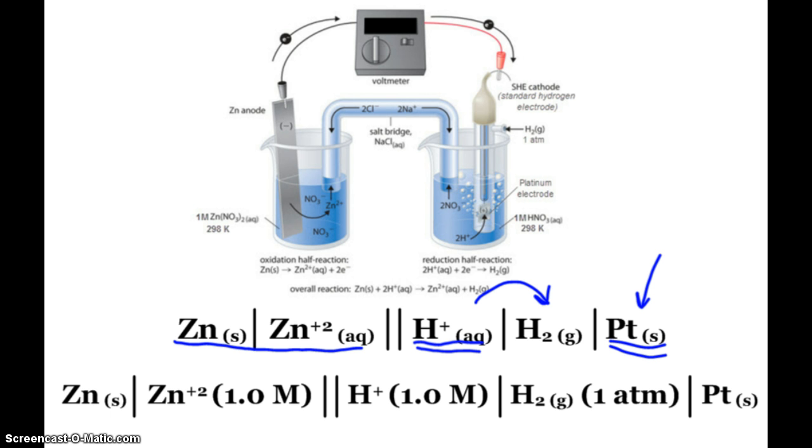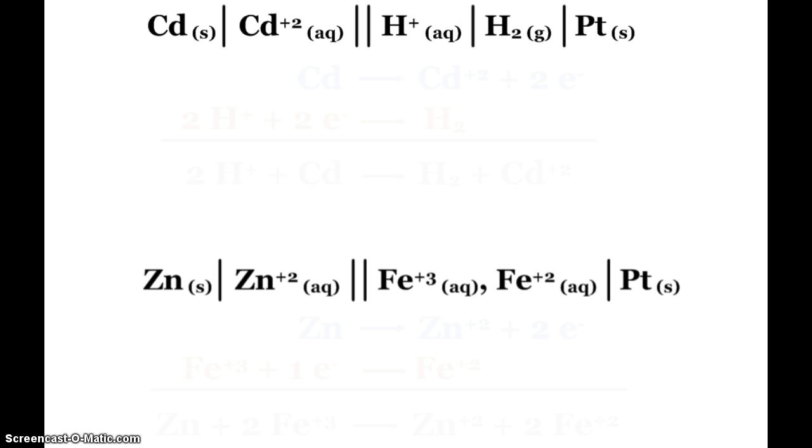So, you see a picture of a cell, you can write the notation. Or from a notation, you could draw or label a picture of a cell. You can also then figure out the overall cell reaction from either the picture or, more typically, from our cell notation here. So, here we have a cadmium electrode, and hydrogen is being reduced with the platinum electrode. And so, I want to know the overall redox reaction. So, I need to find the reduction half reaction and the oxidation half reaction, and combine them, getting rid of the electrons.